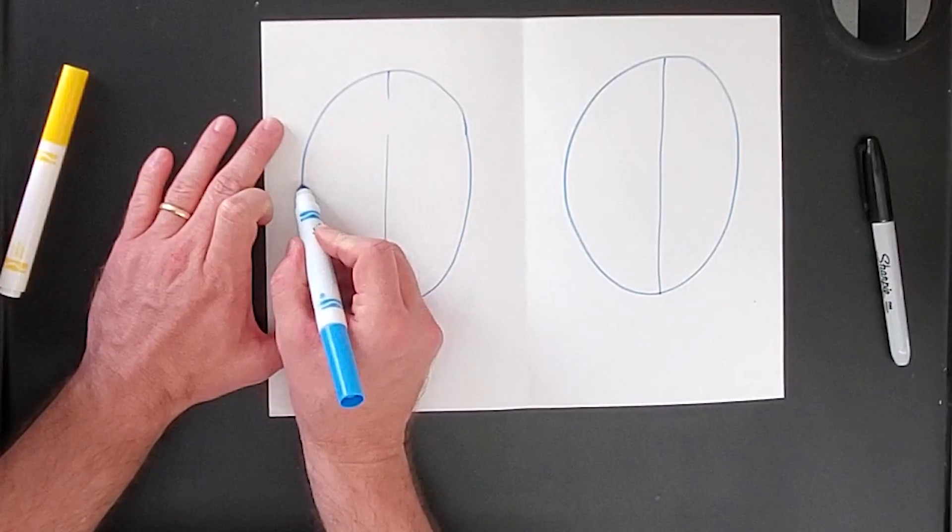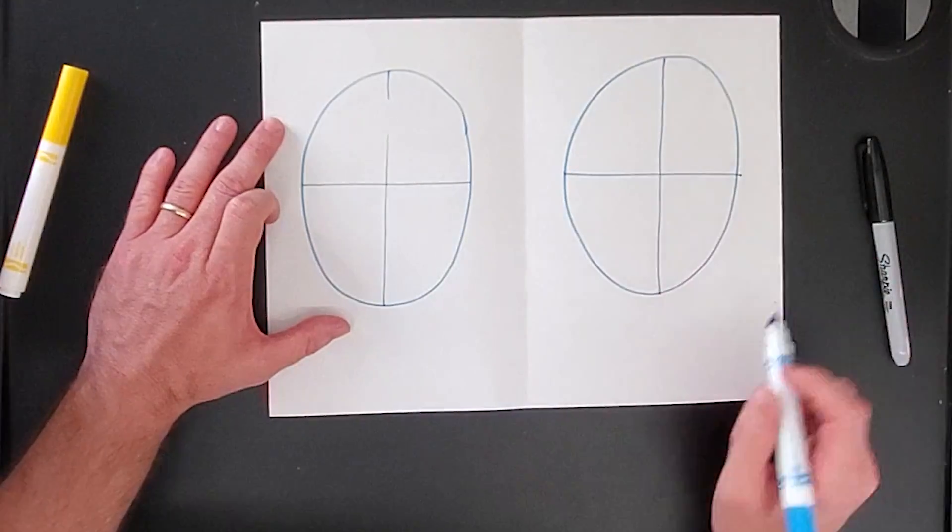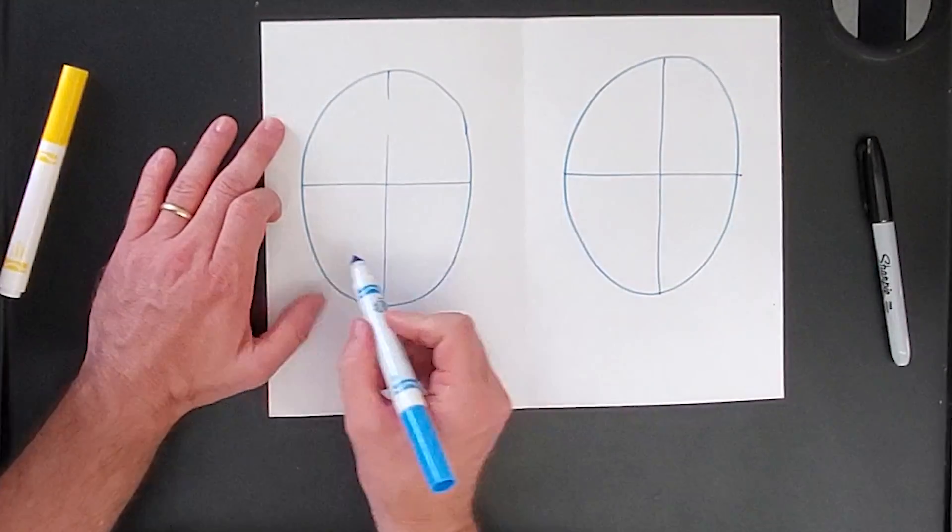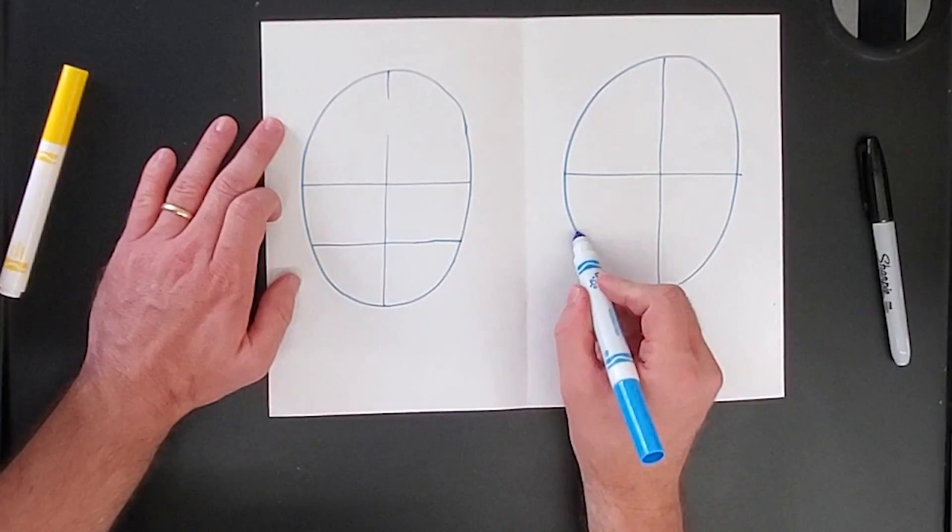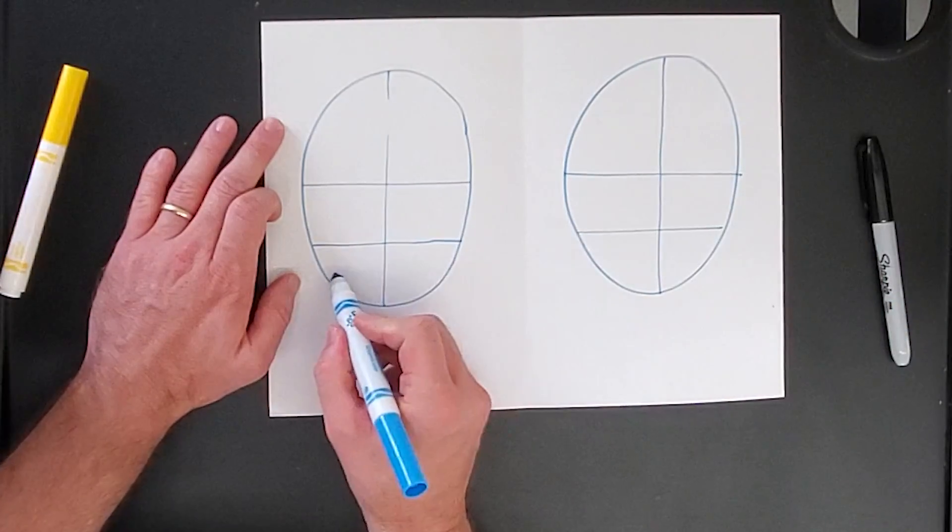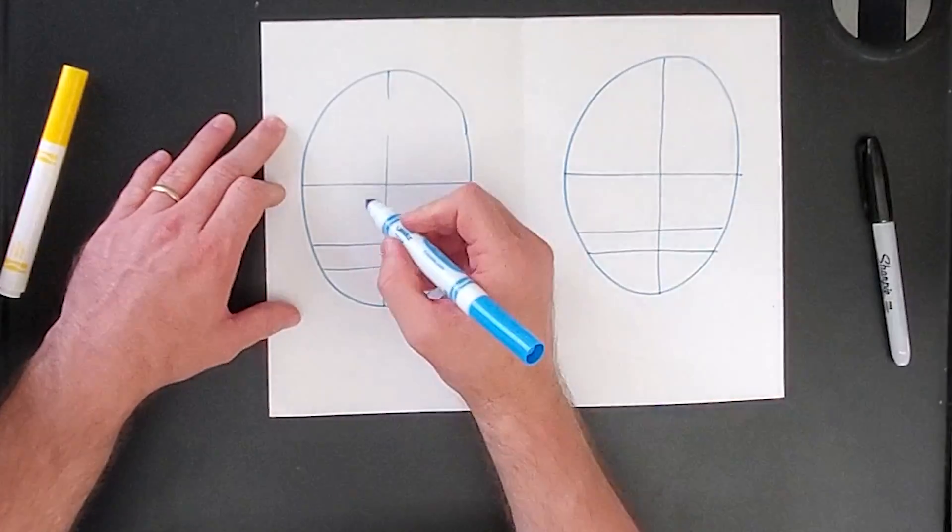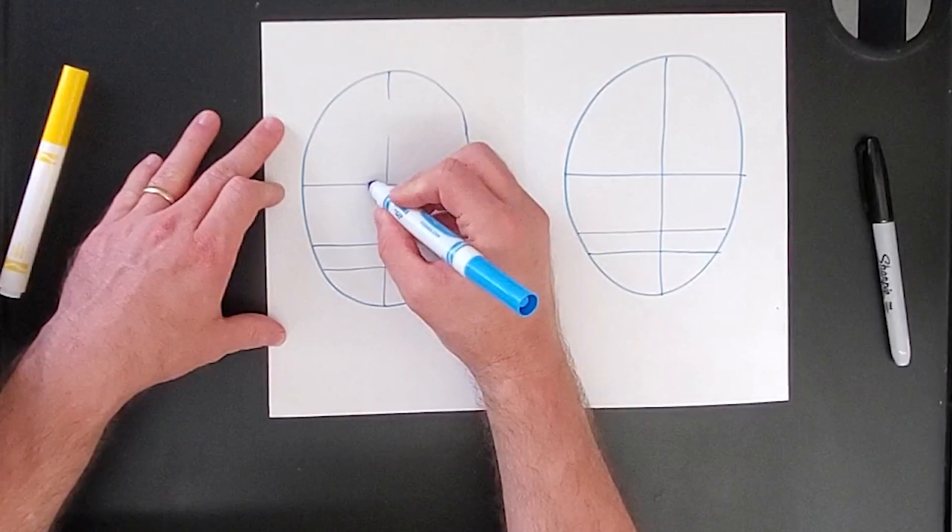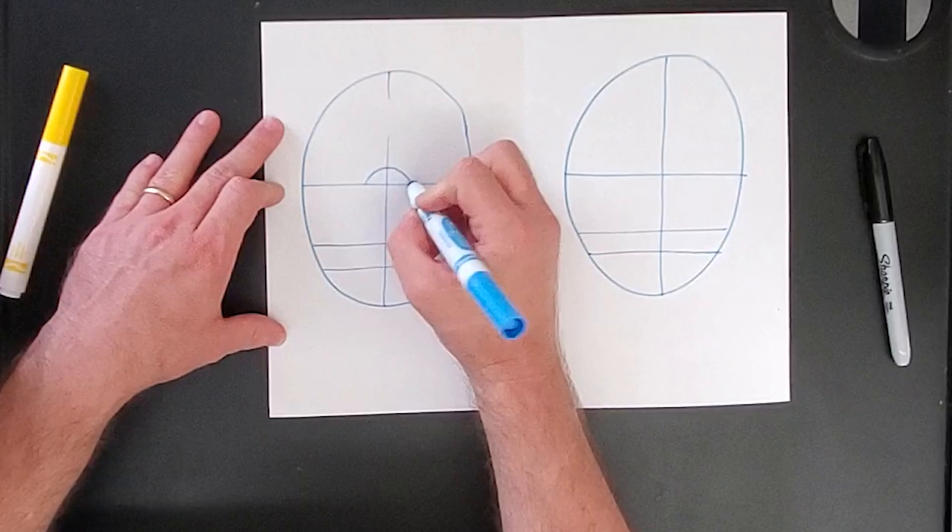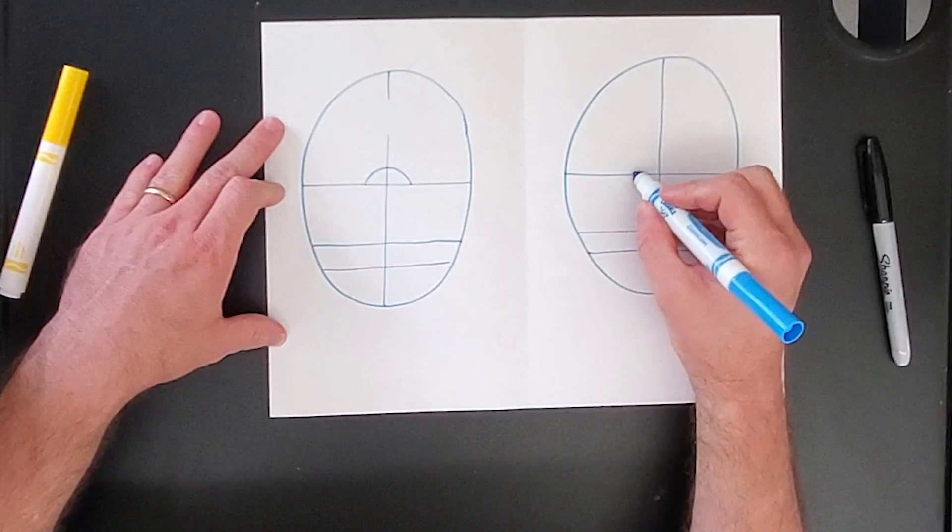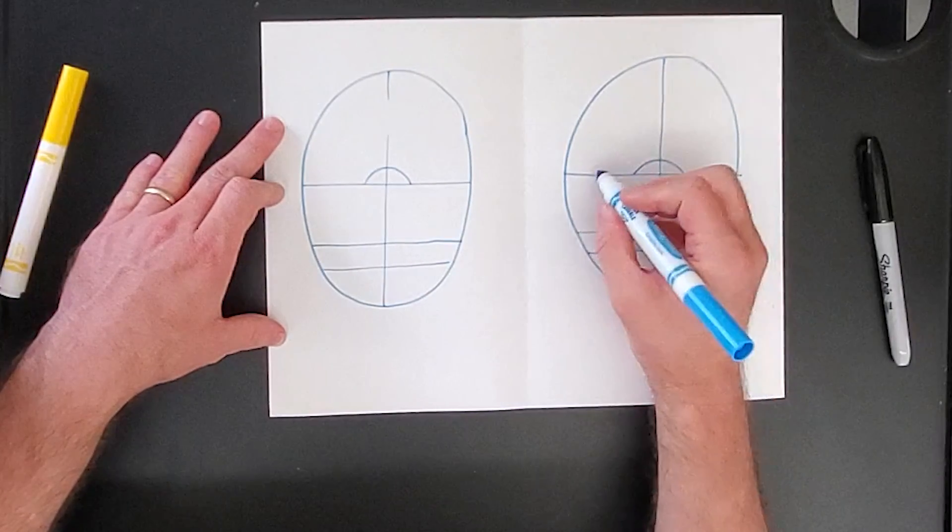Halfway between the eye line and the chin line, I will draw a line for where the nose would go. And halfway between the nose and the chin, I'll draw a line where the mouth would go. Now this is a tricky part. The human head should be about five eyes wide. So I'm going to try and make each head five eyes wide.